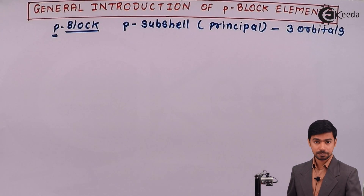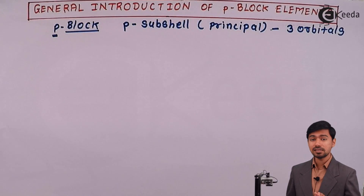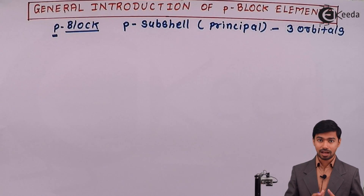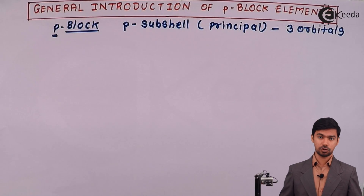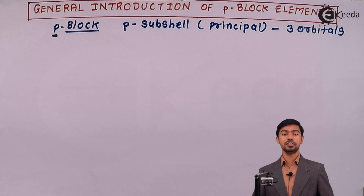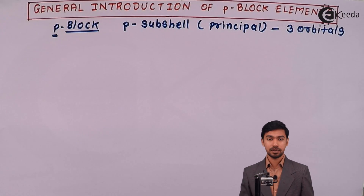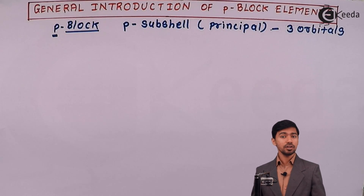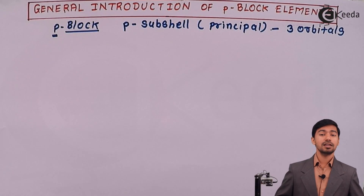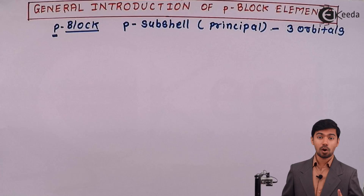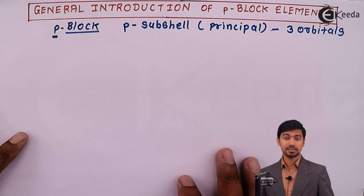P-block elements are those elements in which the valence electron is entering into the p-subshell. Those elements which show the entry of a valence or last electron into a p-subshell are called p-block elements.